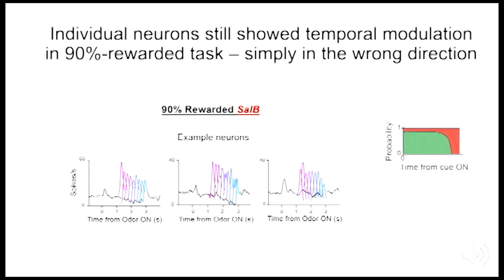Here I'm showing a few more examples of neurons recorded in the 90% rewarded task, and you can see that it's not as if these neurons have lost their ability to track time. Instead, the temporal modulation is definitely there, but just in the wrong direction, as if these neurons no longer have access to the appropriate belief state for the 90% rewarded task. In other words, these neurons signaled as if the belief state were erroneously frozen in time.